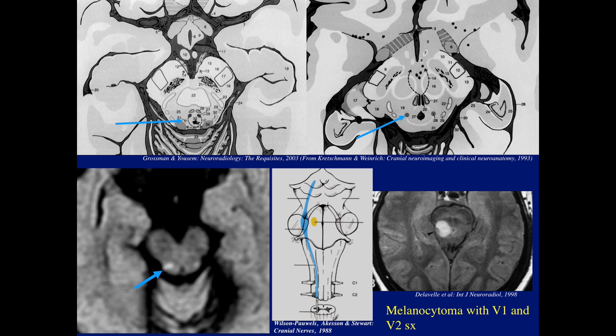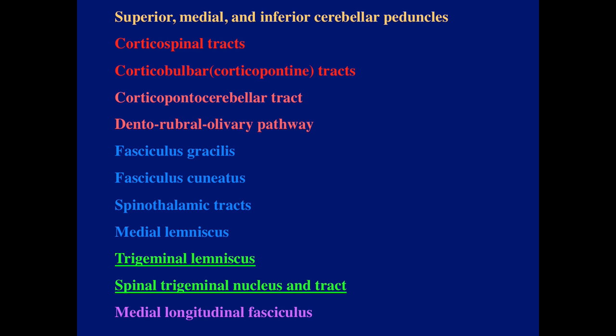I want to point out that the upper portion of this sensory nucleus handles proprioception, the level of the fourth ventricle handles touch, and lower down towards the medulla and upper cervical spine handles pain and temperature. In the last two sessions I covered the peduncles, the corticospinal tracts, the dentato-rubro-olivary pathway, and the various tracts of the sensory system.